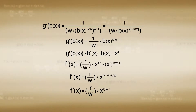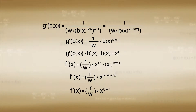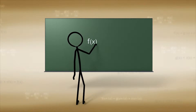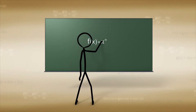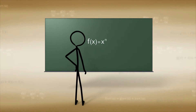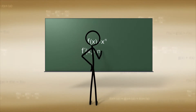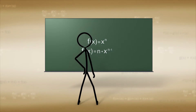With this proof, we can show that if n is an exponent — whether a whole number, positive or negative, or a fraction — it is true that if f of x is equal to x raised to the power of n, then the derivative of f of x is equal to n times x raised to the power of n minus 1.